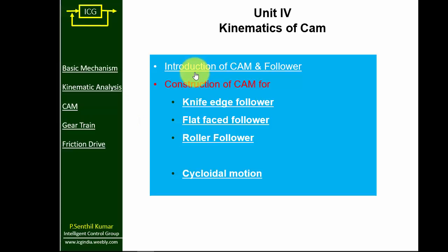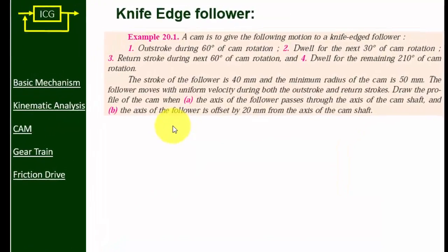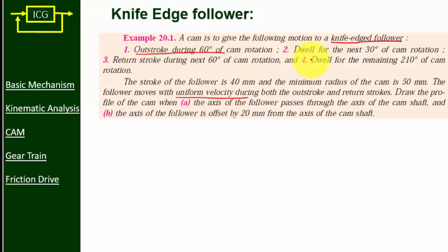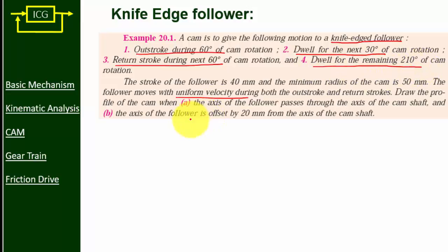Welcome to Intelligent Control Group. In this lecture, we are going to discuss the CAM profile for a knife edge follower subjected to uniform velocity motion. Out stroke 60 degrees, dwell 30 degrees, return stroke 60 degrees then remaining dwell. Stroke length 40 mm, base circle radius 50 mm.